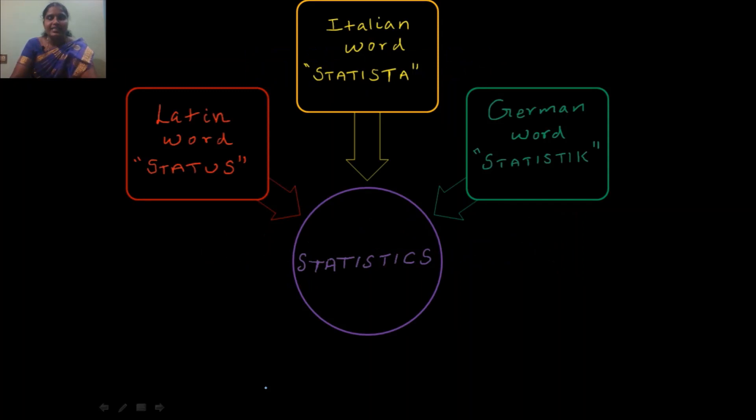Actually, the subject of statistics is not a new discipline. It is as old as human society itself and it has a very long history. The word statistic seems to have been derived either from the Latin word status, or from the Italian word statista, or from the German word statistik. The meaning of all these three words is political state.